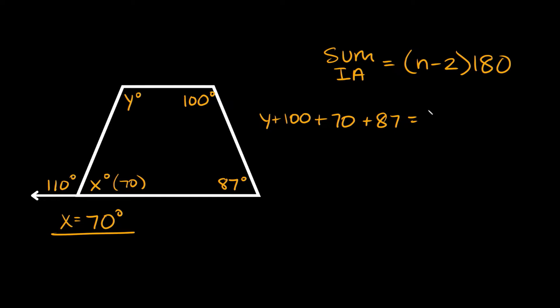So that's going to be equal to n minus 2, so 4 minus 2 times 180. Now if we add up these three numbers right here, 170 and 87, that's equal to 257. So then we're going to have y plus 257 is equal to 4 minus 2 is equal to 2, and then 2 times 180 is equal to 360.